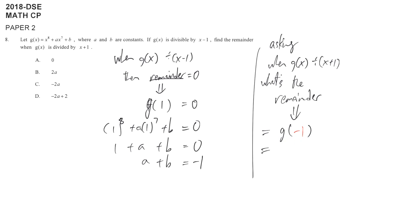Our target is something power 8 plus a something power 7 and then plus b. We put negative 1 here. So beware that bracket negative 1 power 8 - every negative 1 can form a pair, so it's positive.